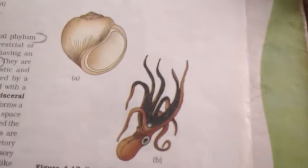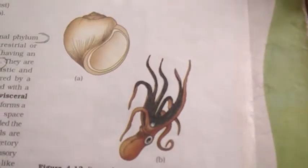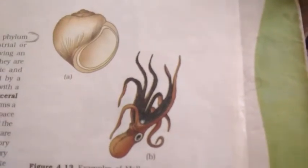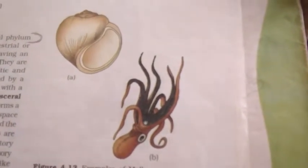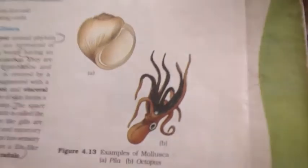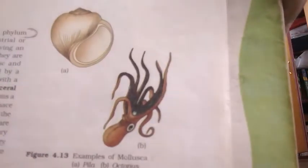They are triploblastic, bilaterally symmetrical. Another important thing is they have soft unsegmented body. Mollusca means soft unsegmented body. You can see within this shell, there is a soft unsegmented body.